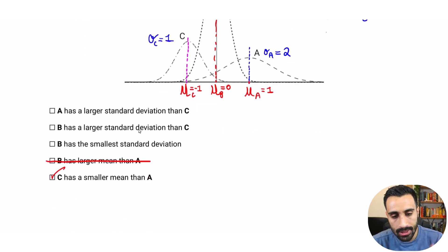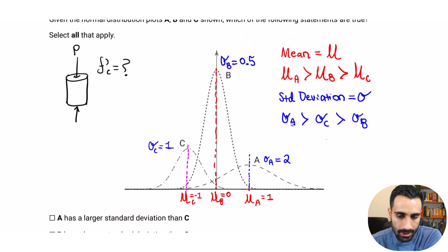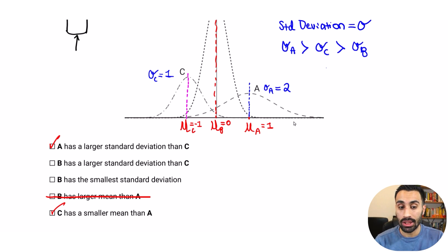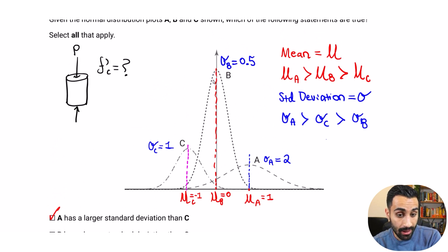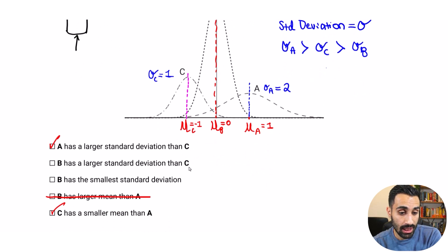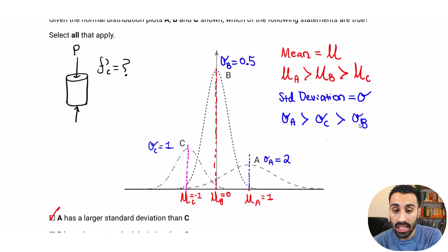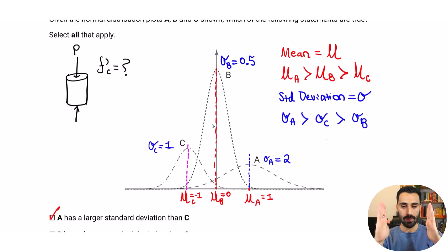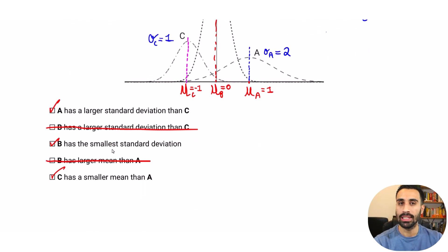Now evaluating the standard deviation answer choices: 'A has a larger standard deviation than C' — yes, σA > σC, so that is true. 'B has a larger standard deviation than C' — B is the very skinny one with σ = 0.5 compared to C's σ = 1, so that is false. 'B has the smallest standard deviation' — yes, B has the very high peak and slim shape, meaning the least variability. That is true.